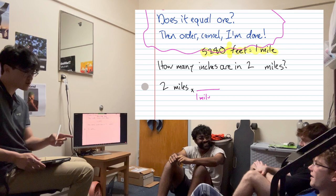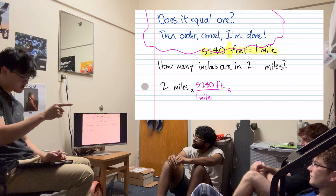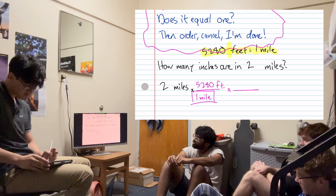Does it equal 1? It does. Then order. So, we've got to put it in the right order. There's 1 mile on top. We've got to have a mile on the bottom. So, we have 1 mile. And then we have 5,280 feet.